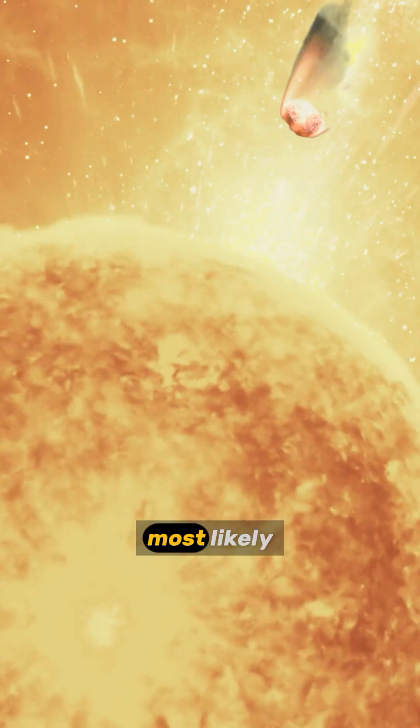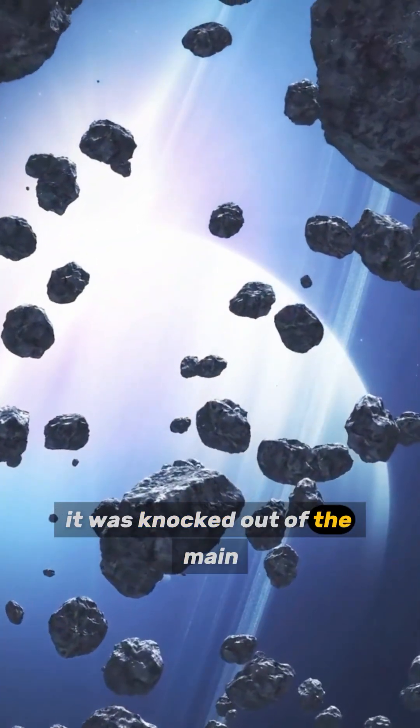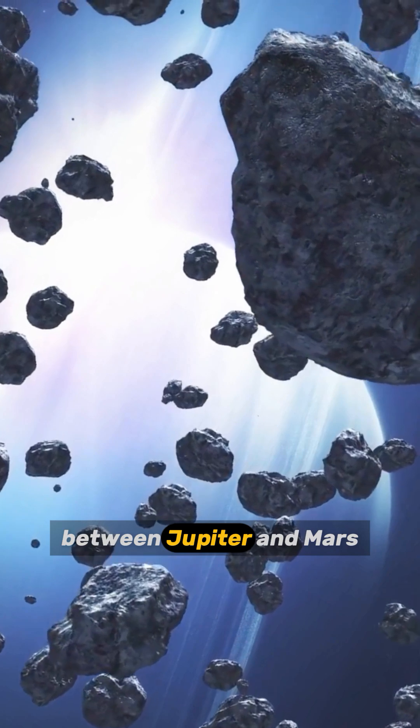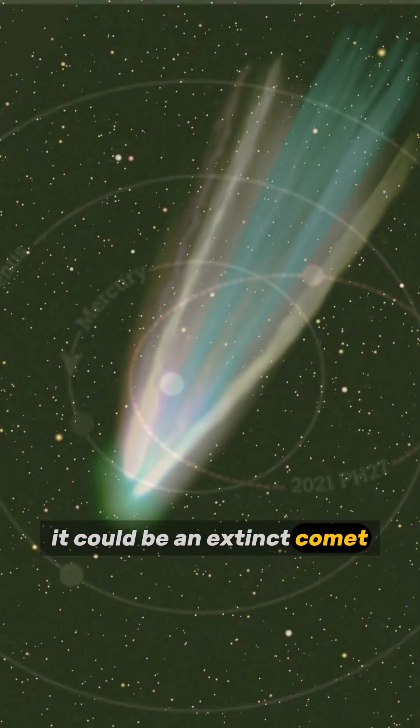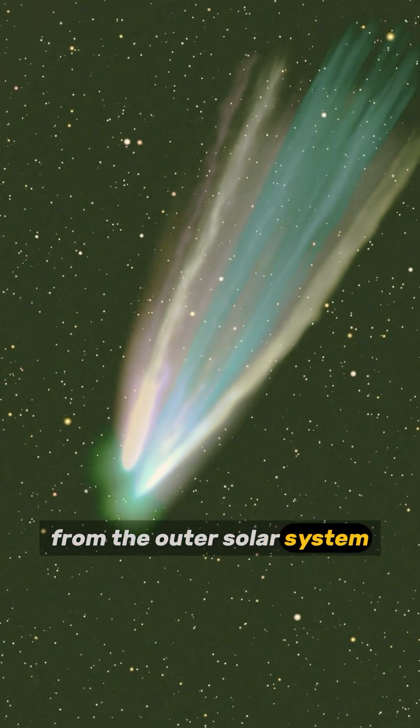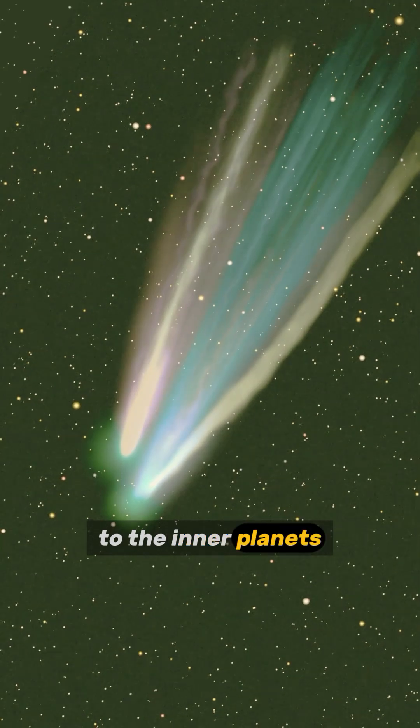Where did it come from? Most likely, it was knocked out of the main asteroid belt between Jupiter and Mars. But with a 32-degree tilt, some scientists think it could be an extinct comet from the outer solar system that wandered too close to the inner planets.